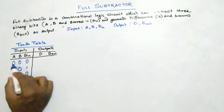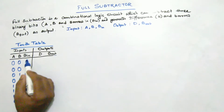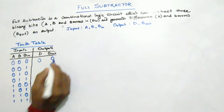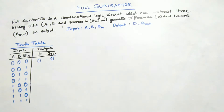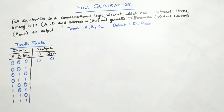We are performing binary subtraction. The rules are: 0 minus 0 equals 0; 1 minus 1 equals 0; 0 minus 1 equals 1 with a borrow out of 1; and 1 minus 0 equals 1. So for the first row, subtracting 0 from 0 gives difference 0 and B out 0.